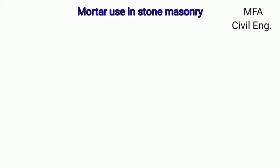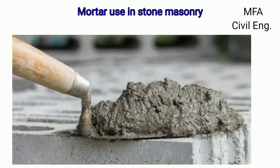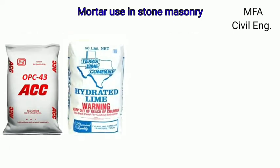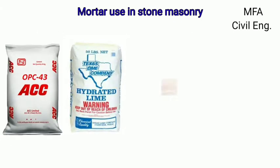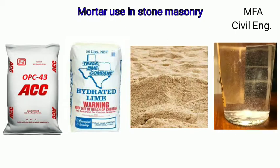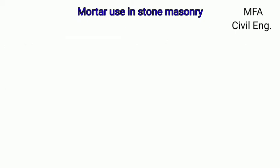Hello everyone, my name is Farzal and you are watching MFA Civil Engineering. The workable paste prepared by mixing a binding material such as cement or lime with fine aggregate and water in a suitable proportion is called mortar.